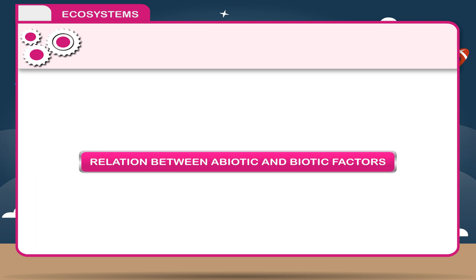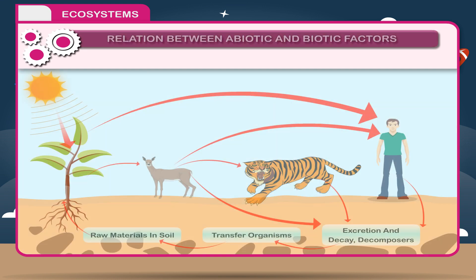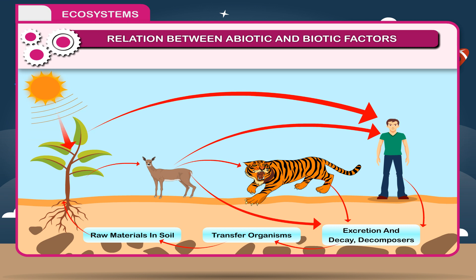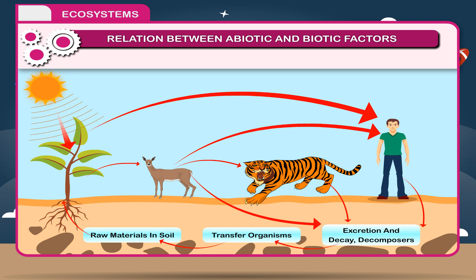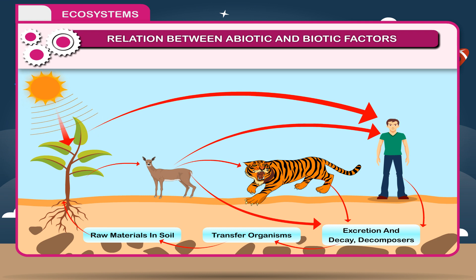Relation between abiotic and biotic factors. All organisms are dependent on the environment, which in turn is influenced by the organisms it supports. All living and non-living components are interdependent. The abiotic factors play a very important role for the survival of plants and animals.